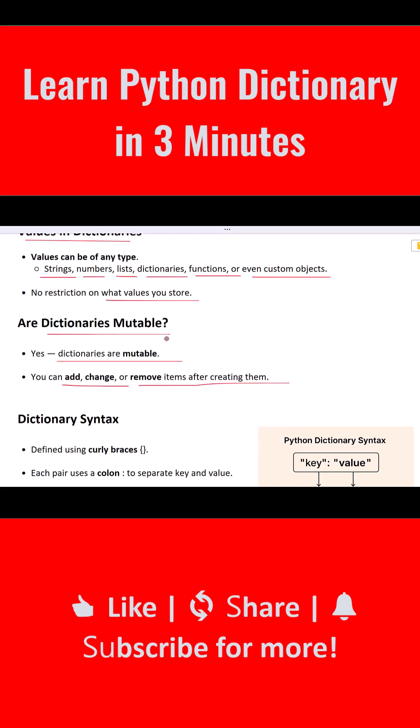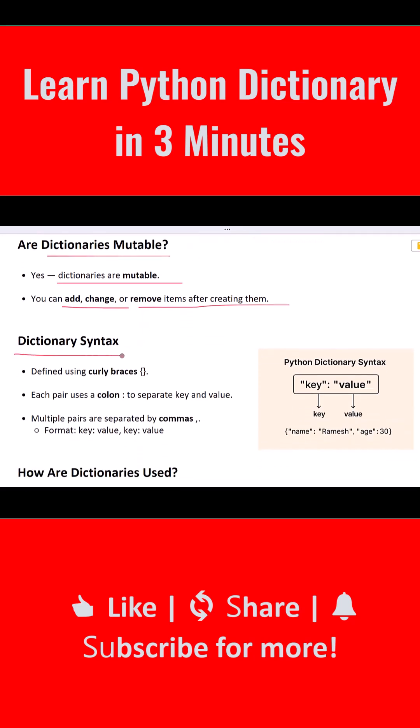Dictionaries are mutable. Yes, dictionaries are mutable, meaning you can change, add, or remove items after the dictionary is created. This makes them flexible and powerful for real-world programming tasks. Dictionaries use curly braces. To define a dictionary, you use curly braces. Each key and value are separated by a colon, and each pair is separated by a comma.